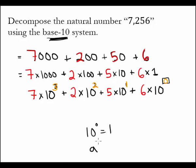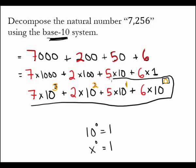And so, in fact, we will learn later that 10 to the 0 power equals 1. And, in fact, any number to the 0 power, any number x to the 0 power also equals 1, assuming that x is not itself 0. So this right here is our final answer. This is how we decompose the number 7,256 using our base-10 notation.